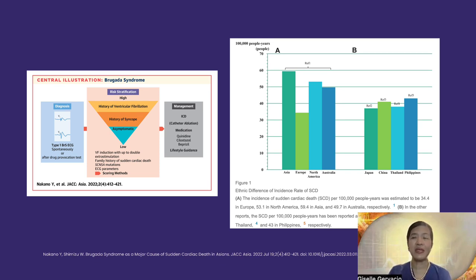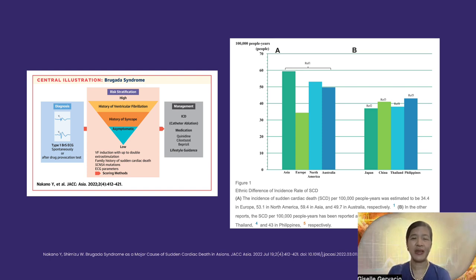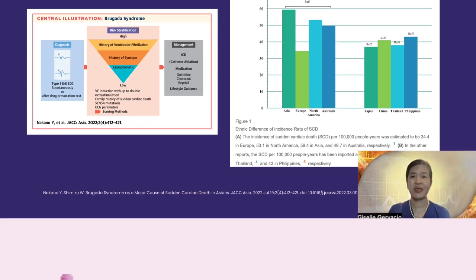In the Philippines, the annualized incidence of sudden unexplained death syndrome based on our data is 43 per 100,000. This is comparable to 37 per 100,000 in Japan, 41 in China, and 38 per 100,000 in Thailand. Overall, the incidence in Asia is higher compared to those in Western countries.